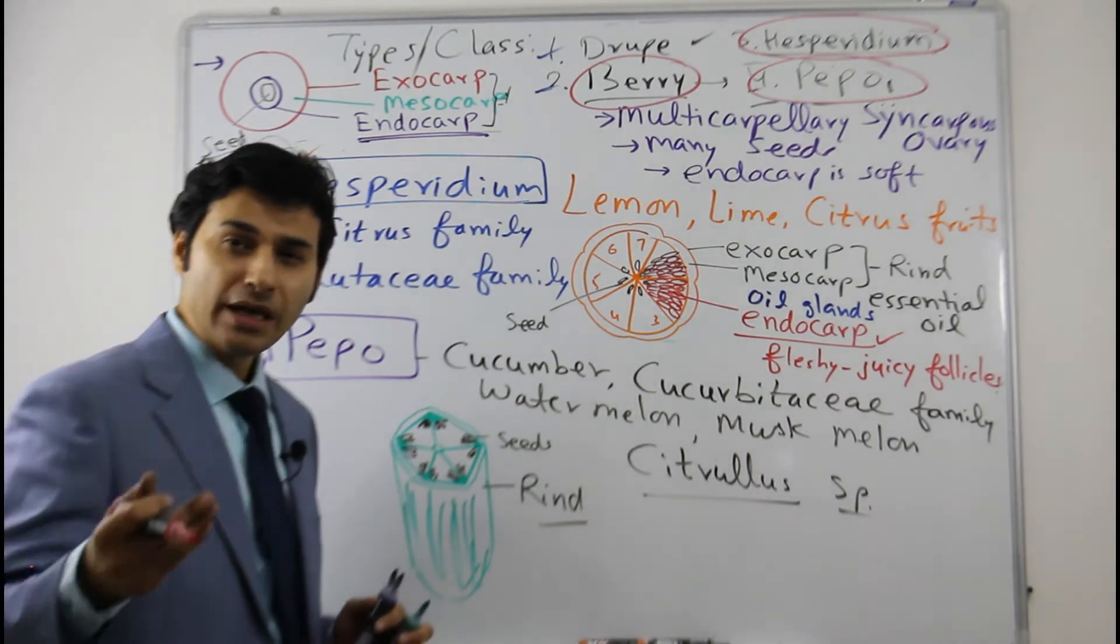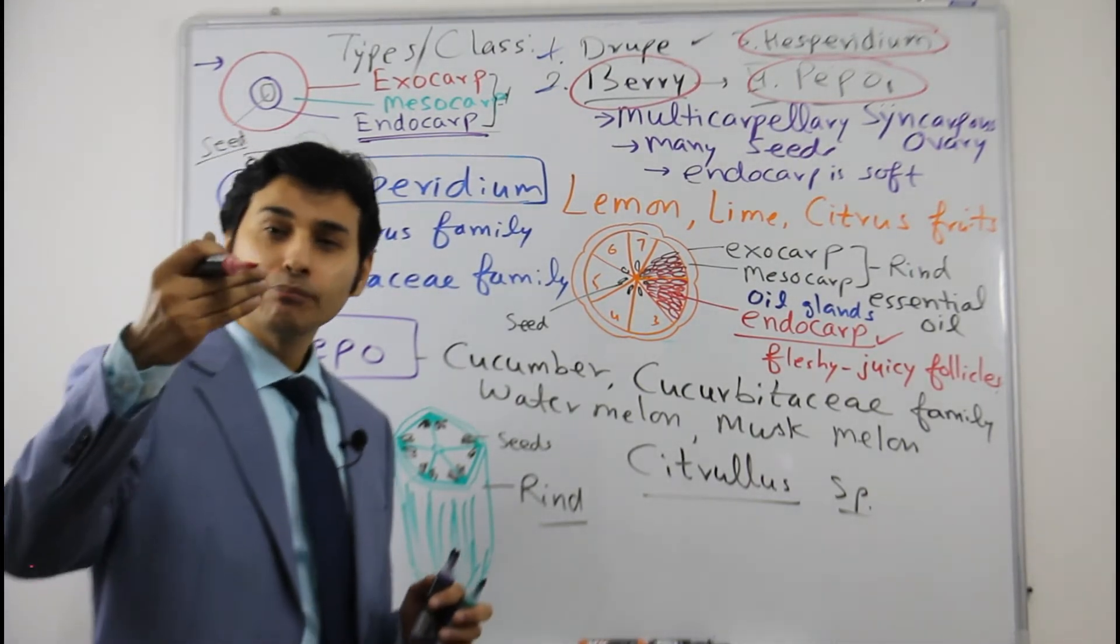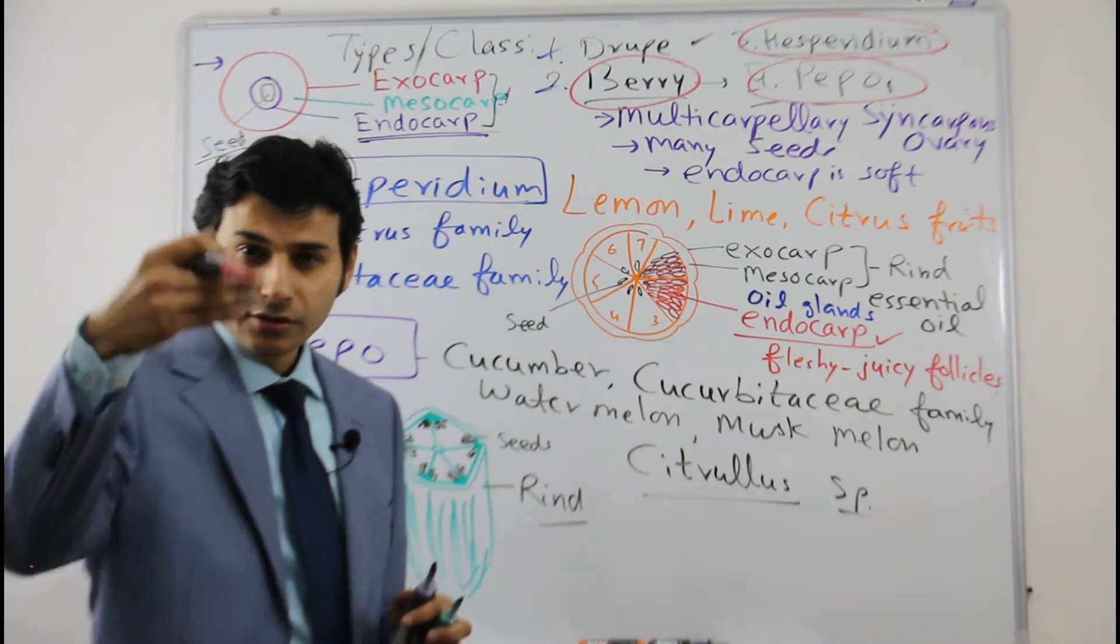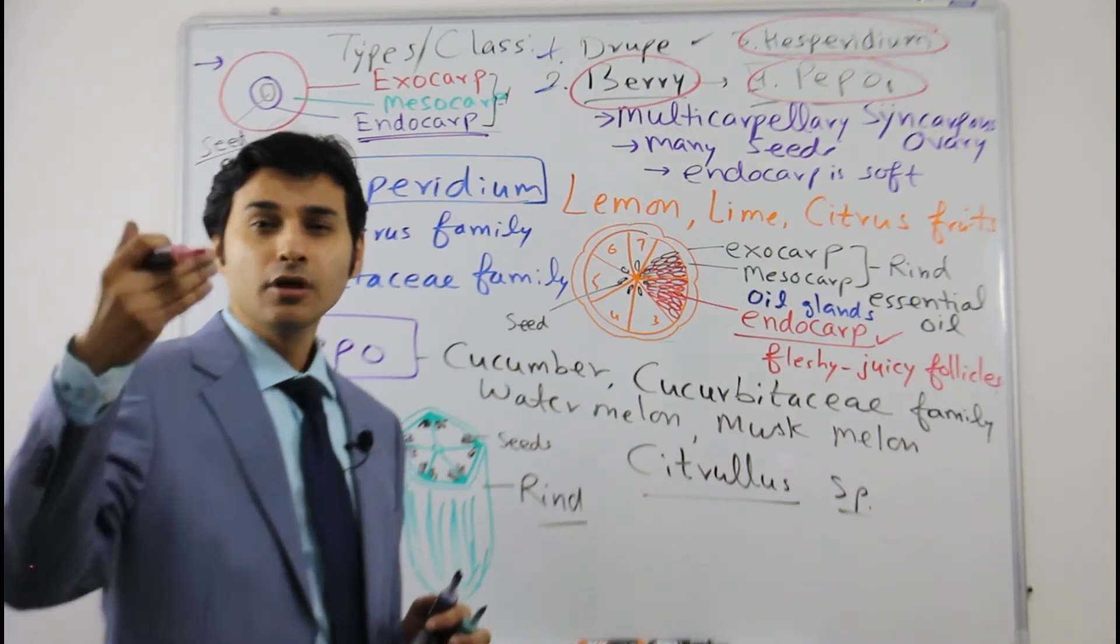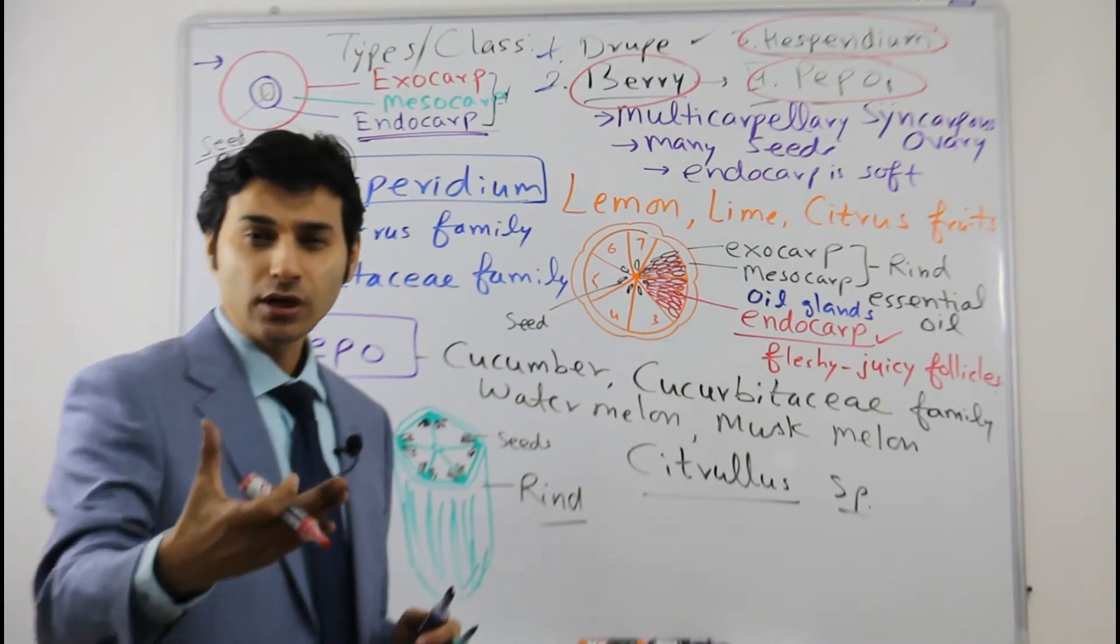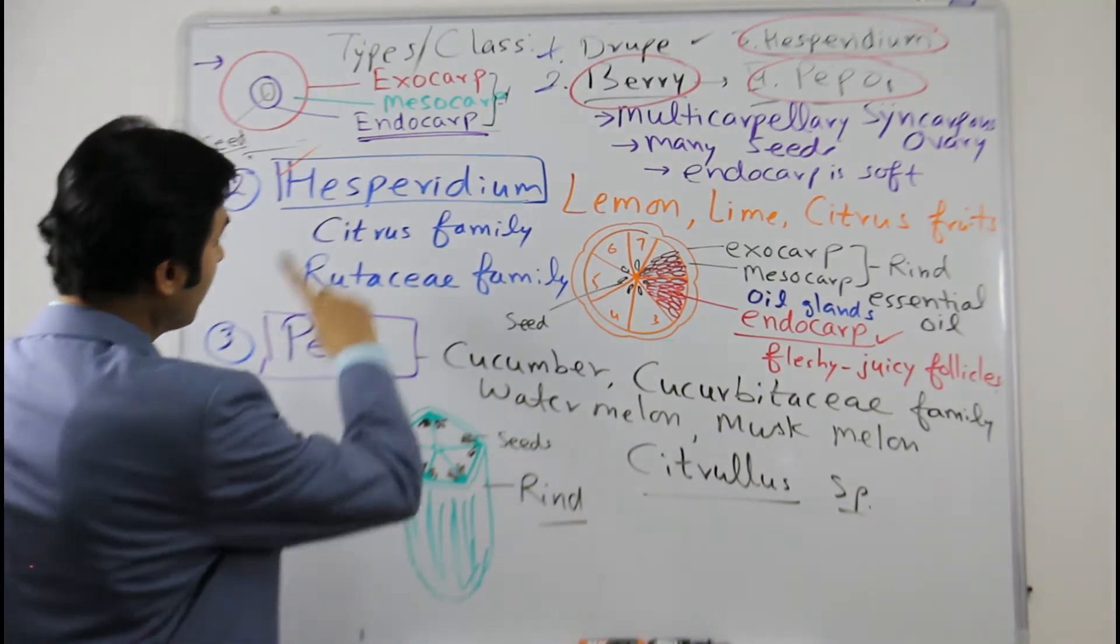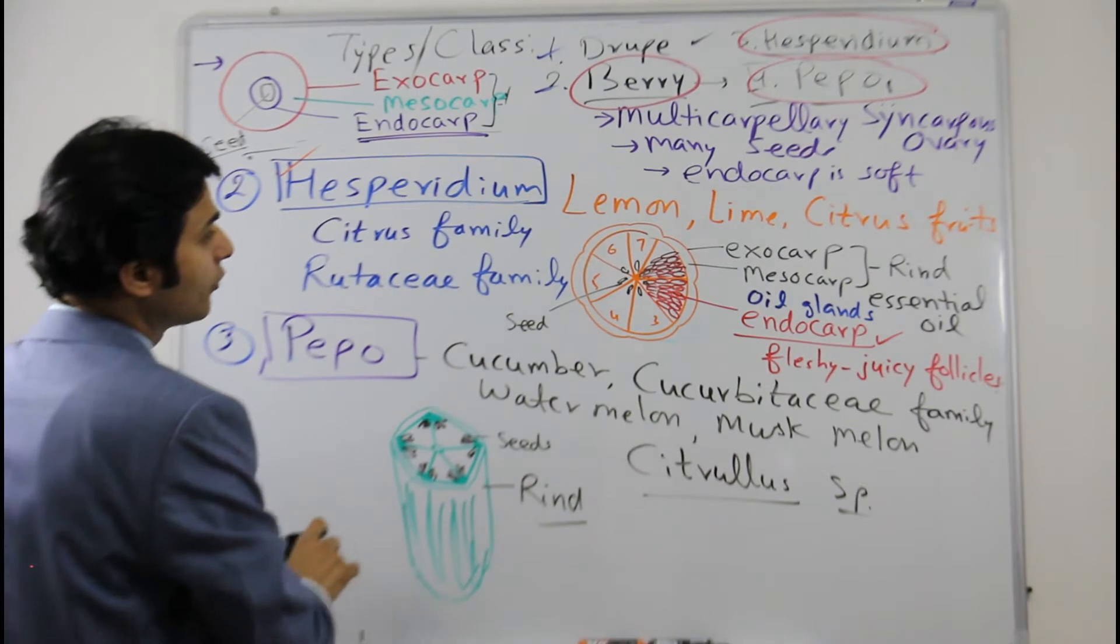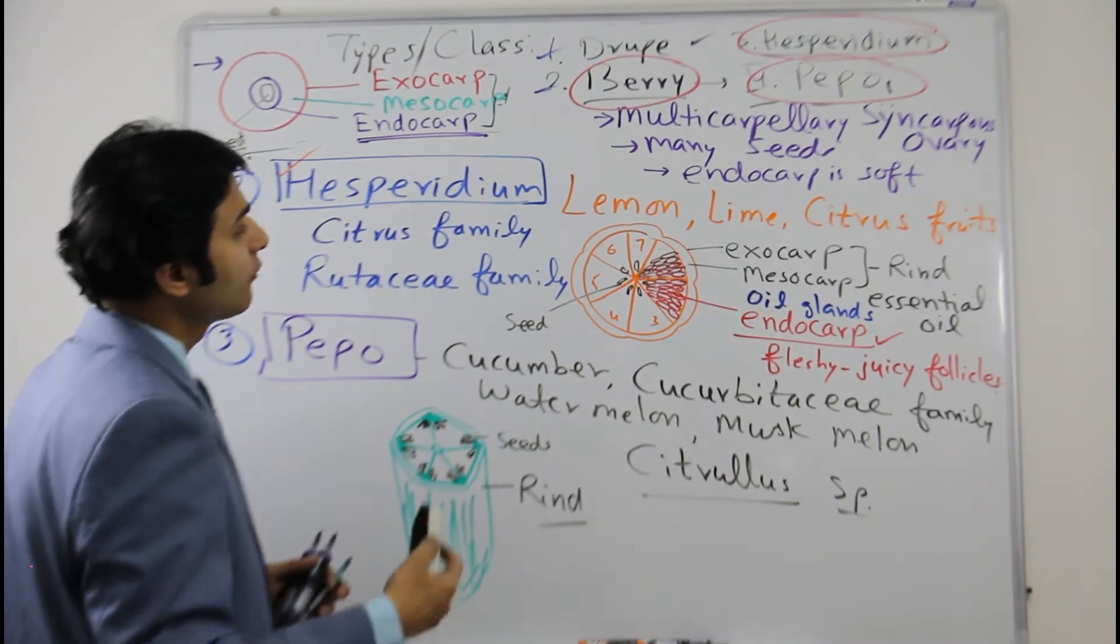After drupe, berry, hesperidium, and pepo, we have other remaining fruits: pom, then balam, that means balastua and emphysacra. So I will remove this now and we will go to the other fruit types.